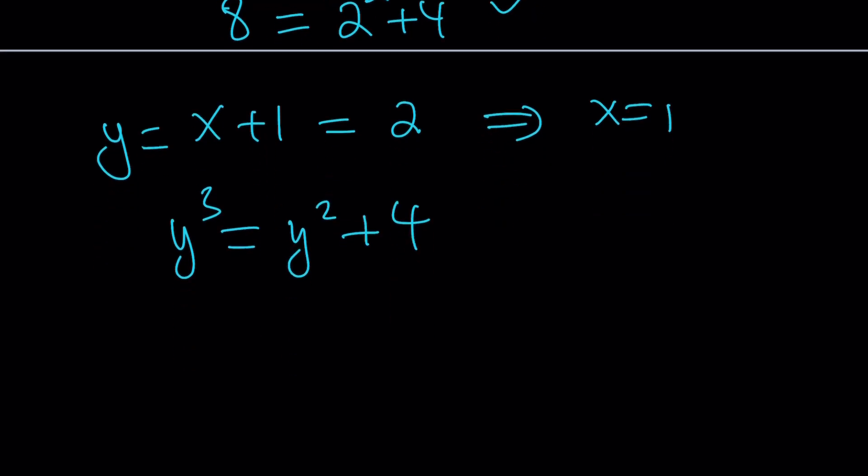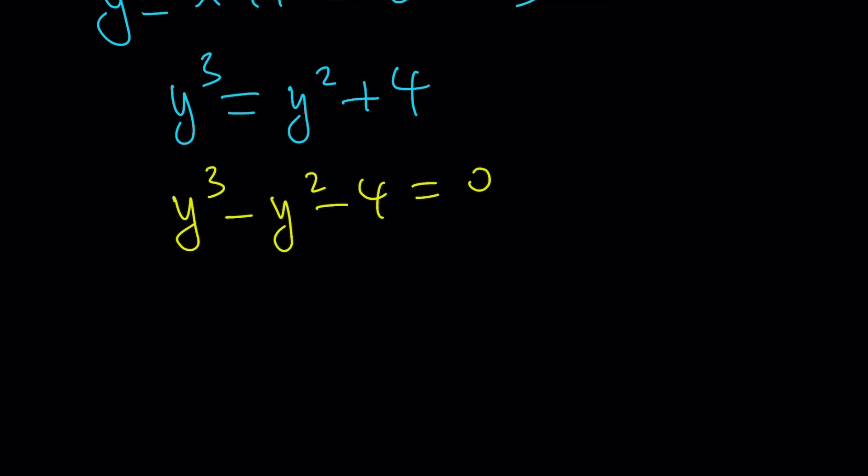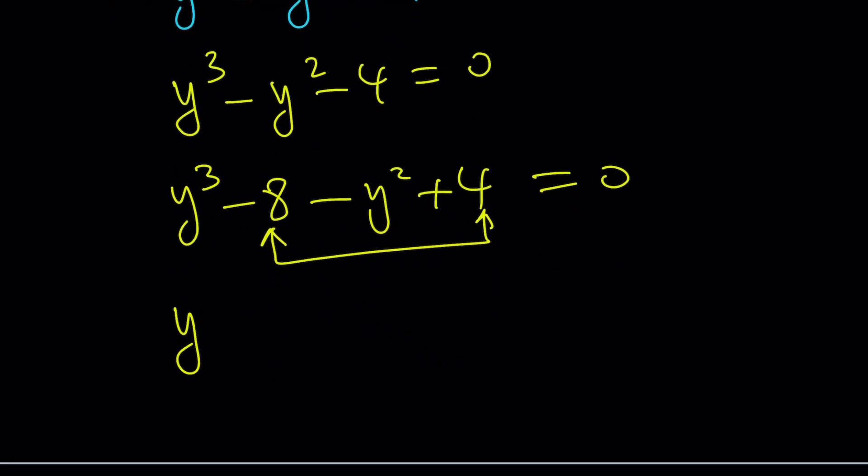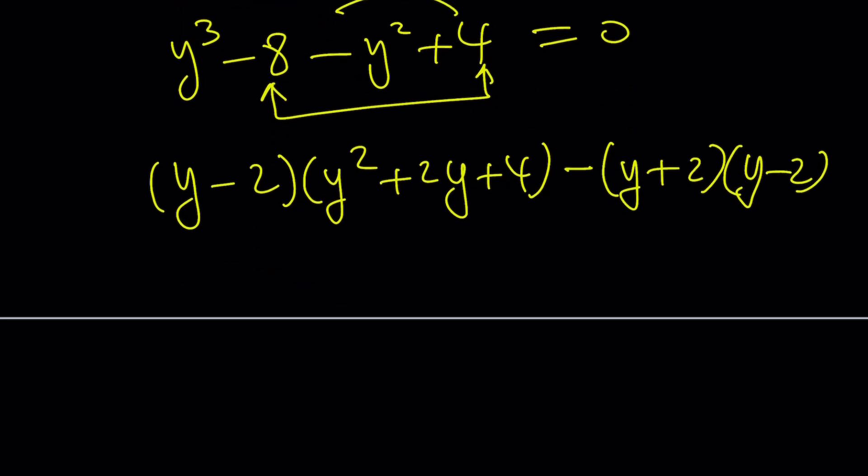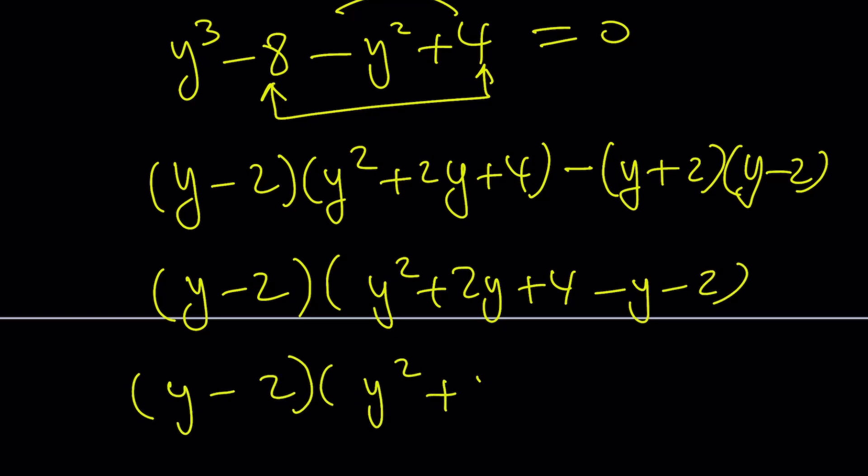You can go ahead and factor this equation because this equation is easier to factor. Put everything on the same side and then break down the negative 4 into negative 8 plus 4. Notice that negative 8 plus 4 is negative 4 but this gives us difference of 2 cubes. Remember that formula, very important. And minus difference of 2 squares. Allow me to write it in factored form. y minus 2 is a factor. Take it out: y squared plus 2y plus 4 minus y minus 2 and then y minus 2 times y minus 2 plus y squared plus y plus 2 equals 0.